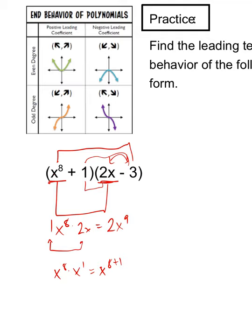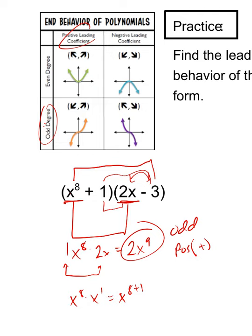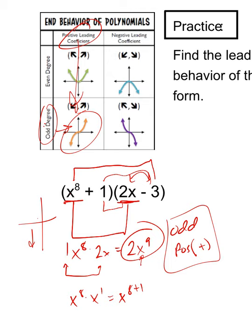With odd degree and a positive leading coefficient: if we put in negative 10 for x, negative 10 to the ninth is a negative number, and a negative number times 2 is still negative. If we put in 10 for x, 10 to the ninth is a positive number, and positive times 2 is still positive. So the end behavior: as x goes to negative infinity, y goes to negative infinity; and as x goes to positive infinity, y goes to positive infinity.